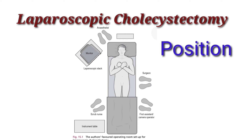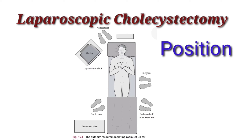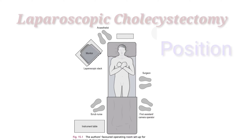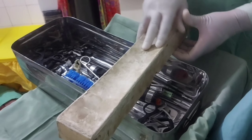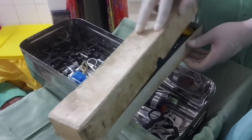During this procedure, surgeon should be on the left side of the patient. Assistant should be to the left of the surgeon, while scrub nurse and instruments are on the right side of the patient. The monitor is on patient's right shoulder at the level of surgeon's eyes.